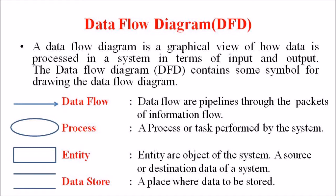To summarize the four fundamental symbols: data flow is represented by an arrowhead, a process is represented by an ellipse or circle, entities are represented by a rectangular box, and data stores are represented by two parallel lines.